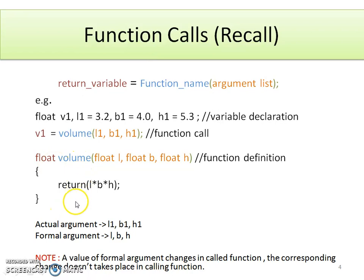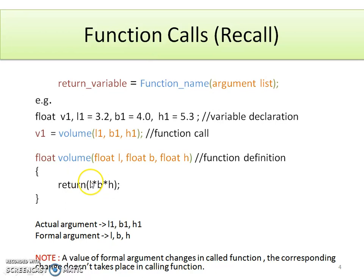I am explaining actual arguments and formal arguments. In this example, L1, b1, and h1 are actual arguments used in the main program. L, b, and h are the formal arguments used in the function definition. Note: if the value of a formal argument changes in the called function, the corresponding change does not take place in the calling function.